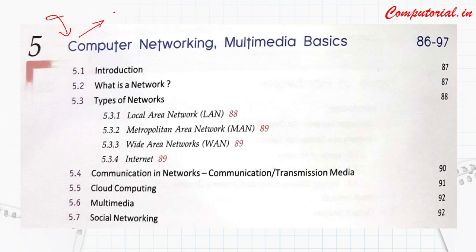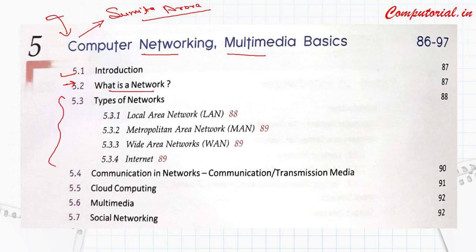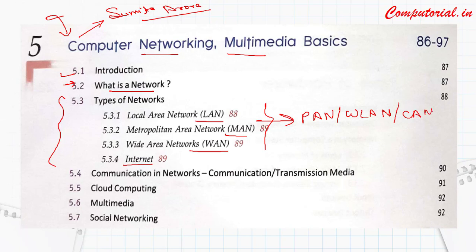It is a screenshot of the Class 9th Computer Application book and the writer is Sumita Arora. In this chapter we have to discuss the following points: the introduction of networking and multimedia, what is a network, and then all the types of network which will include LAN, MAN, WAN, internet, PAN, WLAN, and CAN. So we have to cover all these types of networks.